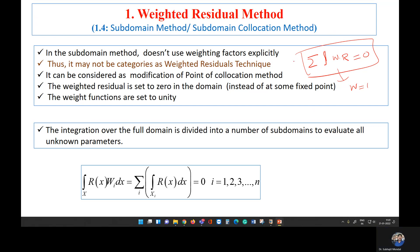Here also you will observe that the value of the weight function is one. In that sense, the subdomain method may not be strictly categorized as a weighted residual method, but since w equals one, it can be treated as a type of weighted residual method. Essentially, we are extending the point collocation method from one point to a subdomain, and then making the summation of all the errors zero.